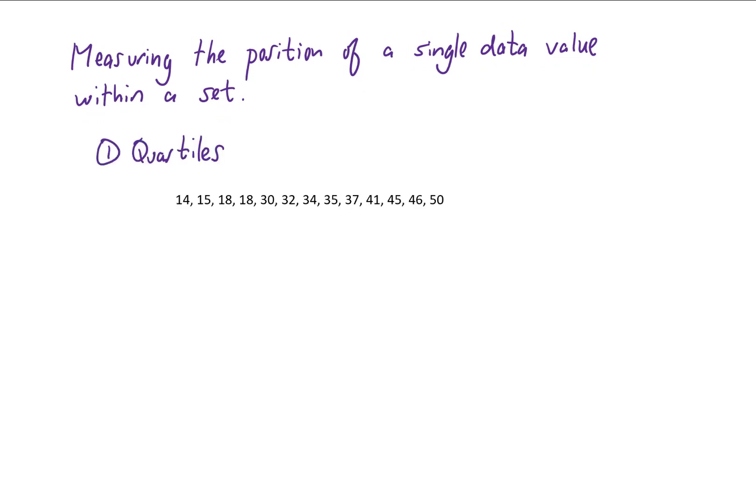Quartiles break a set of data into four pieces. The first step is to find the median of this data. To find the median, we work our way towards the middle value. Of course, if our data wasn't ordered first, we would have to do that.